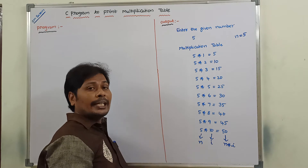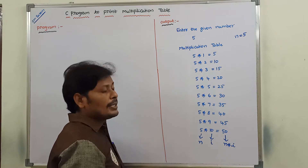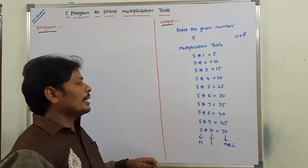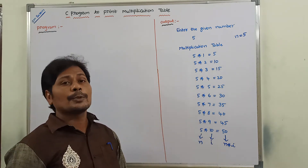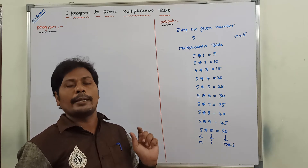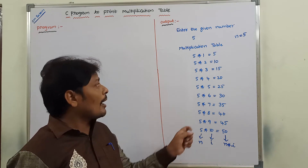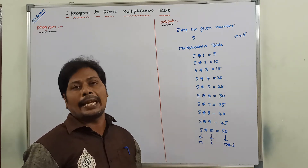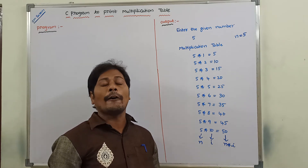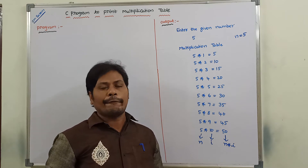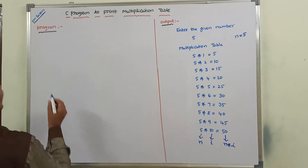If i value is greater than 10, the condition is false and the program is terminated. So we have to execute the same statement 10 times, meaning we have to use a for loop. In that for loop, the loop variable i starts with 1 and ends with 10. Each time, the loop variable i is incremented after executing the body of the for loop. This is the output of the program, and now we can write the program.